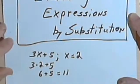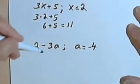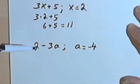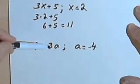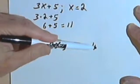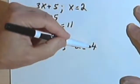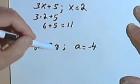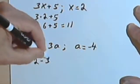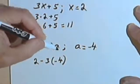And that's it. Now there are some cases where you have to be a little more careful. For instance, let's say you're given 2 minus 3a as your expression, and you're evaluating it when a equals negative 4. So watch out for negatives. Let's substitute negative 4 for the a, so I get 2 minus 3 times negative 4.